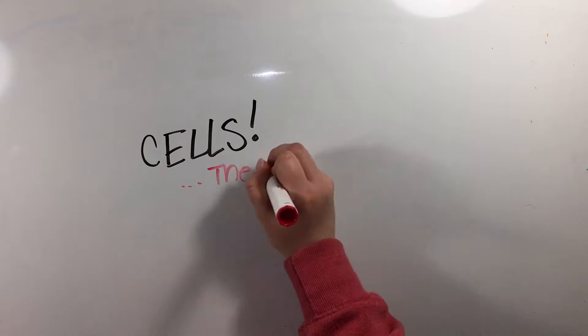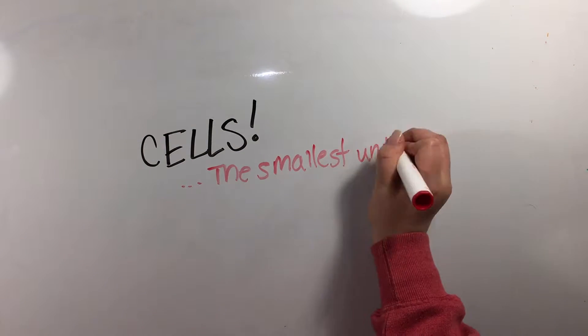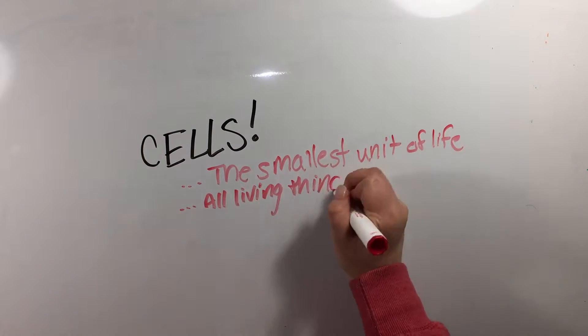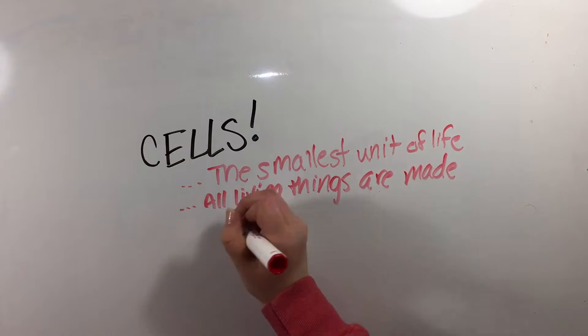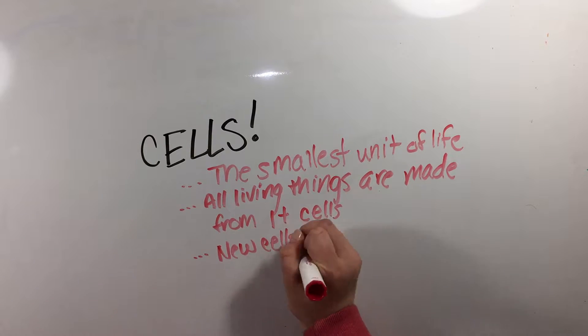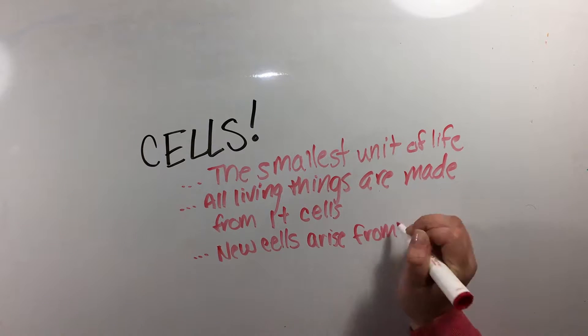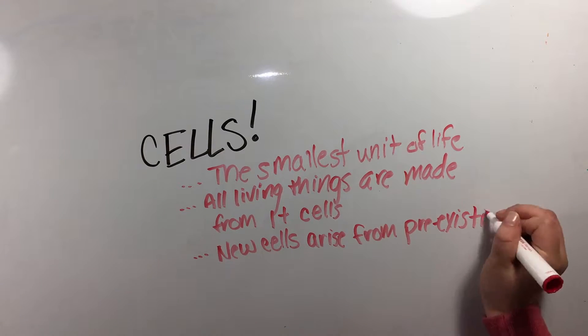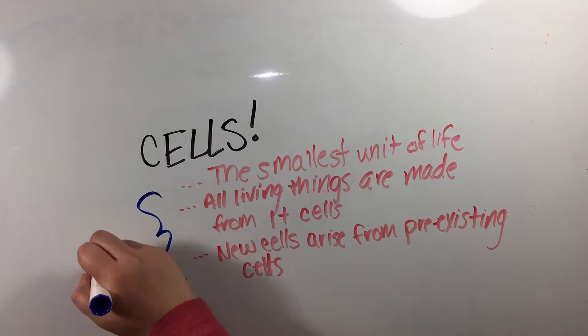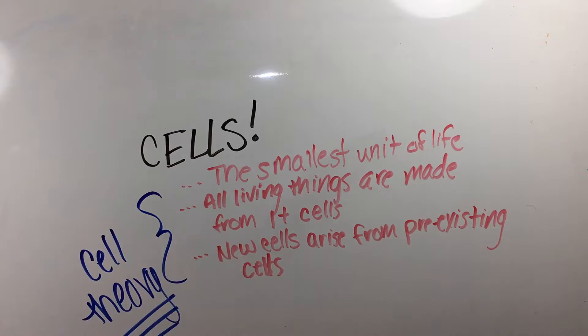Let's recap the study of cells. Cells are the smallest unit of life. All living things are made from one or more cells, and new cells arise from pre-existing cells. This is known as the cell theory.